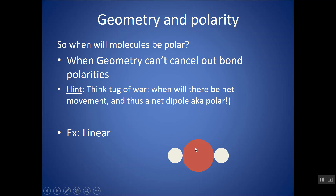Think of it like a tug of war. In a linear structure, here's my central atom with two atoms on either side. If these outer atoms are more electronegative than your central atom, they're going to be pulling electrons toward them. As long as these two outside atoms are exactly the same — say they're both Cl or both O — and they're exactly on either side, their polarities are going to cancel out. This is going to be tugging just this way, just as hard as this is tugging that way. Like a tug of war, that rope isn't going to move anywhere.